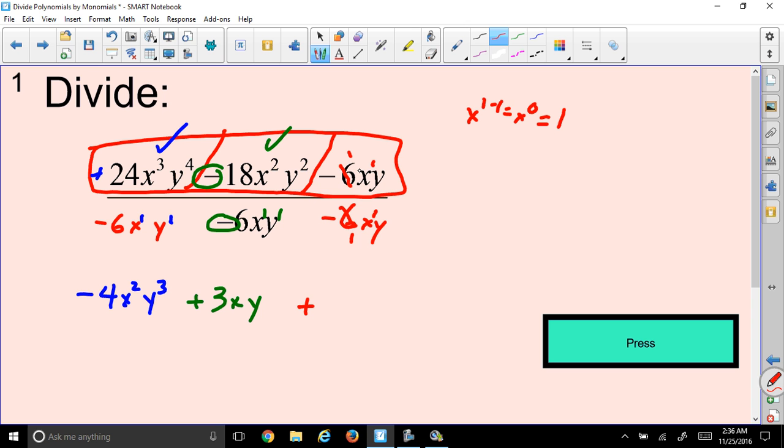So, or in a sense, you could have said this cancels out as well, or cancels down to 1. And this cancels down to 1. And y to the first power minus y to the first power, subtracting the exponents again. 1 minus 1 gives us y to the 0 power, and that also equals 1. Or you could say this cancels down as well.